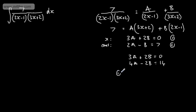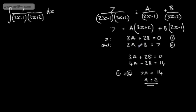Adding equation 1 and equation 2, we get 7a equals 14, so a equals 2. Substituting back in, b equals minus 3. So a is equal to 2 and b is equal to minus 3.